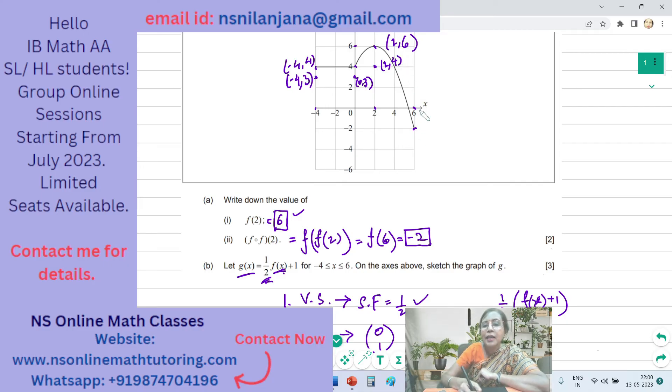Finally, X equal to 6. The corresponding Y value is negative 2. So this is the point 6 comma negative 2. And half of negative 2 is negative 1 plus 1 is 0. So this will be the point on the G of X curve. It will be 6 comma 0.